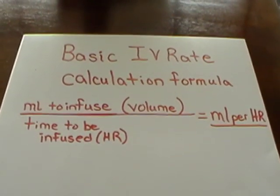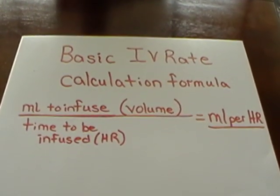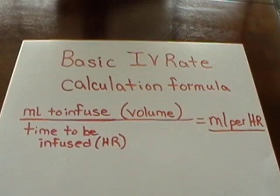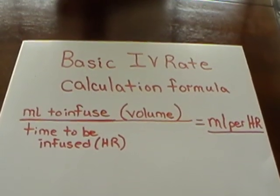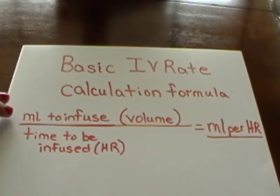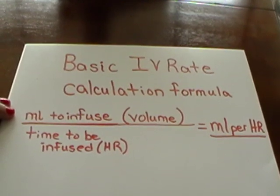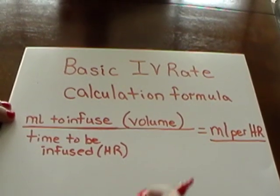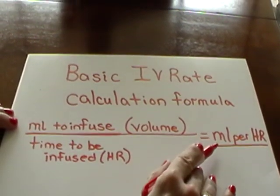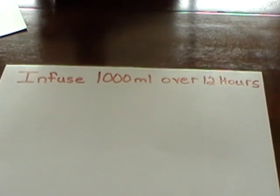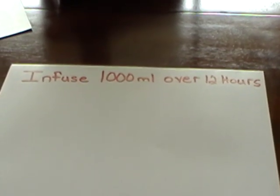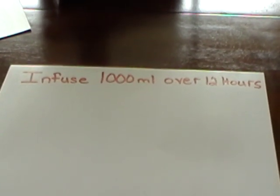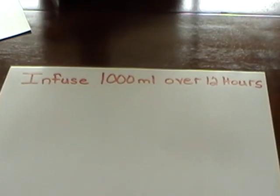The first type of problem that we're going to work is a basic IV rate calculation formula. With this type of problem, you always put milliliters to infuse, your volume, over time to be infused, your hours. This will equal milliliters per hour. We're going to work a problem so that I can show you how to do a milliliters per hour IV problem.